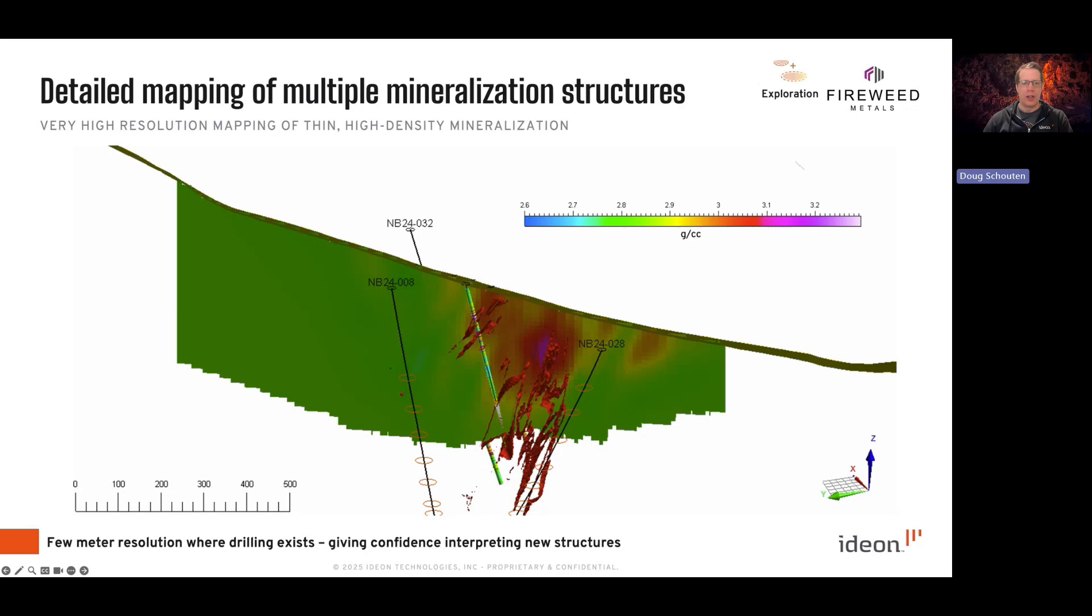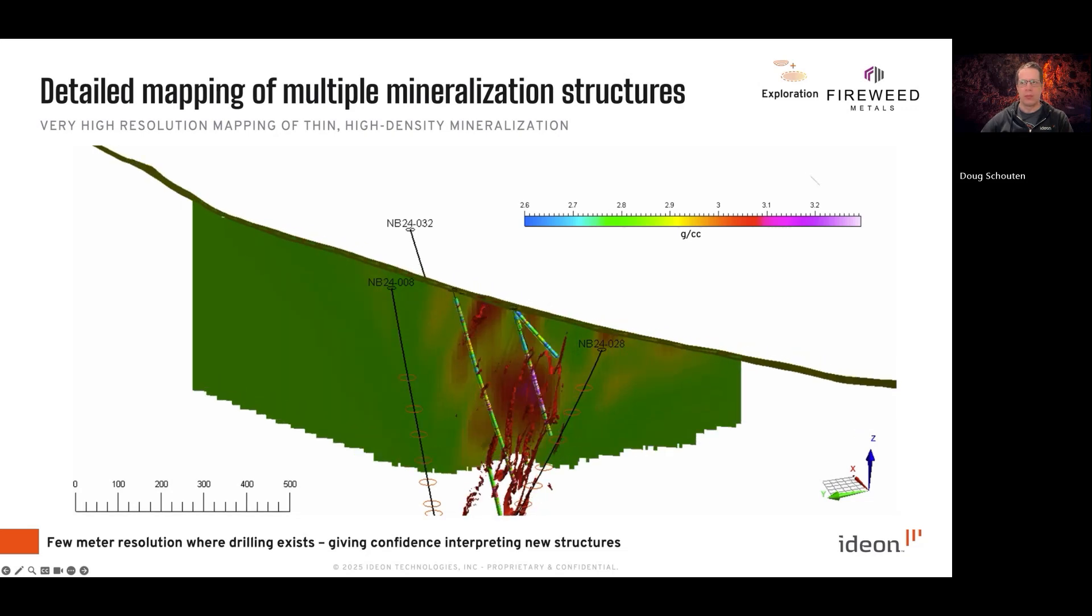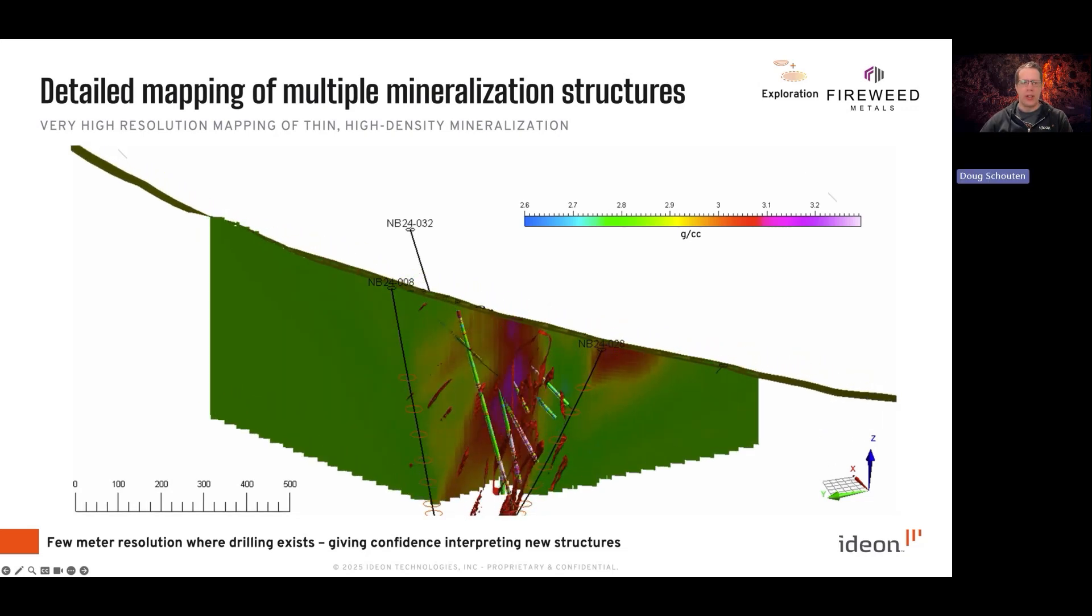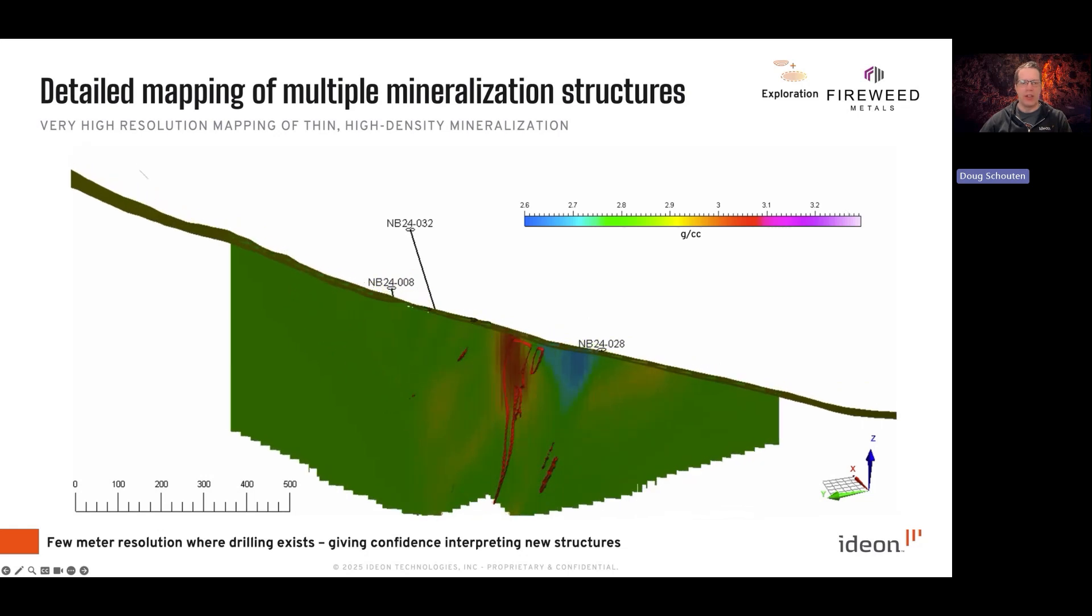And then the drill data, the core data from which that density model is derived is also shown. Where the drill data exists, there's very good correspondence. Even very subtle features at depth are being resolved by the muon data very well.